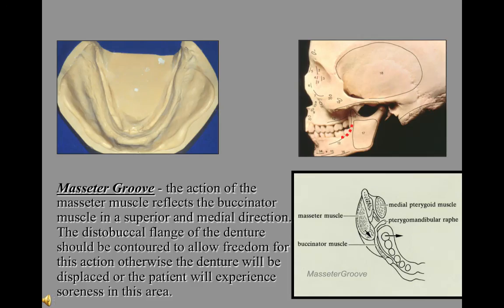Note the masseter groove. The action of the masseter muscle reflects the buccinator muscle in a superior and medial direction. The distal buccal flange of the denture has to be contoured to allow freedom for this muscle; otherwise, the denture will be displaced or the patient will experience soreness in this area.